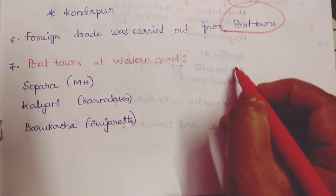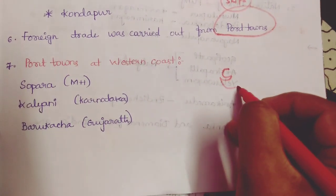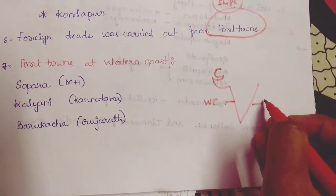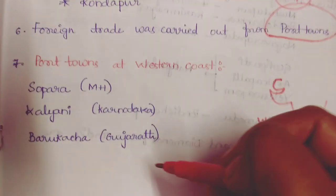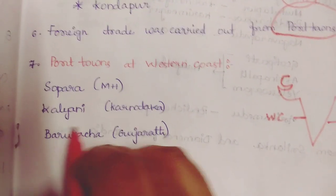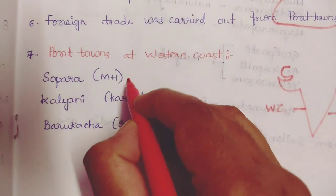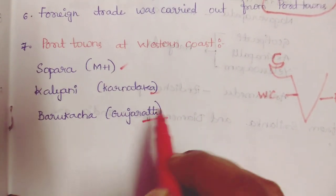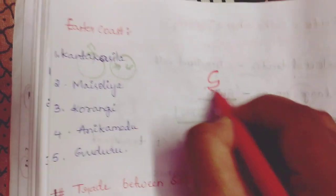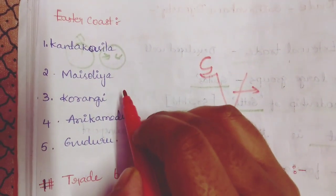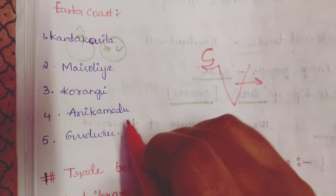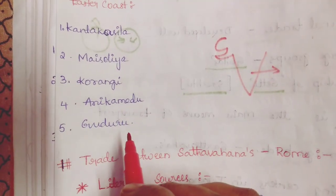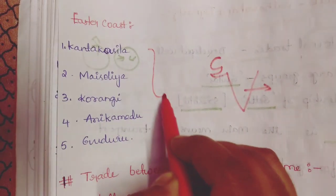There are two coastal plains for India — the western coast and the eastern coast. The port towns on the western coast are Supara, Kalyani, and Barukaccha. Supara is in today's Maharashtra, Kalyani is in Karnataka, and Barukaccha is in Gujarat. The port towns on the eastern coast are Kanta Kasila, Mysolia, Korangi, and Arikamedu. All these eastern coast places are found in Andhra Pradesh.